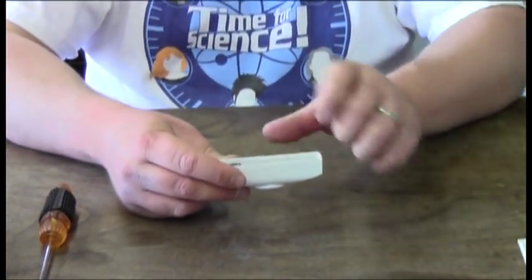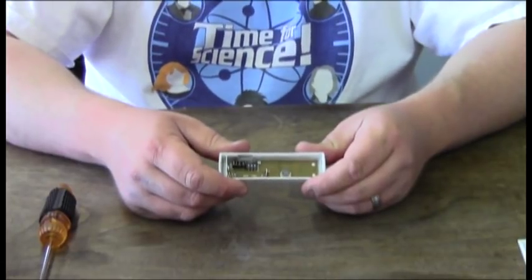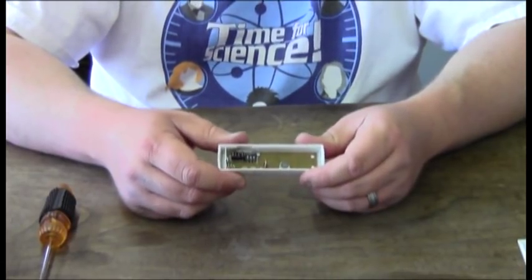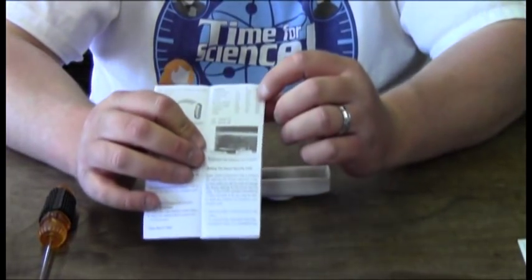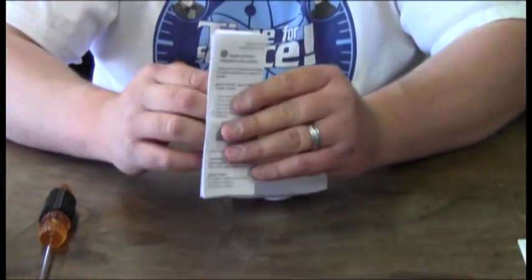The dip switches here are to change between the tones. Once again you've got six tones to choose from. The instruction manual has a little guide here on how to set the dip switches for each tone that you want.